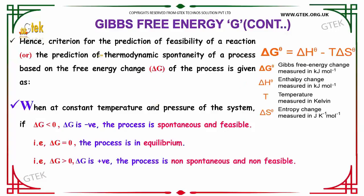Let's discuss further on the Gibbs free energy. There are three conditions available, and based on the value of delta G — the free energy change — the process is defined. The criterion for prediction of feasibility of a reaction, or the thermodynamic spontaneity of a process based on the free energy change, is given as: Delta G less than zero, meaning it's negative — the process is spontaneous and feasible.